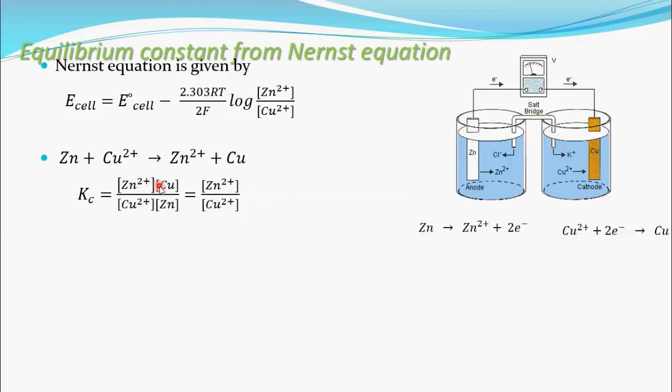But concentration of solids will be taken as unity. So concentration of Cu and concentration of Zn will become 1. So then K_c equal to concentration of zinc ions divided by concentration of copper ions. Now substitute this K_c value, this K_c value and E_cell as 0 in this Nernst equation.